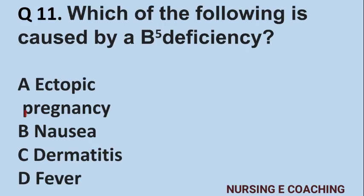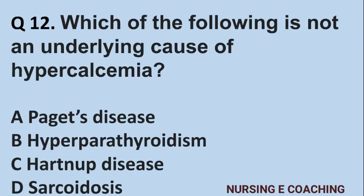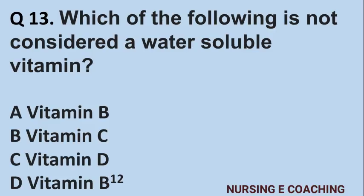Question number 12: Which of the following is not considered an underlying cause of hypercalcemia? A) Paget's disease, B) Hyperparathyroidism, C) Hartened disease, D) Sarcoidosis. Answer is C) Hartened disease.